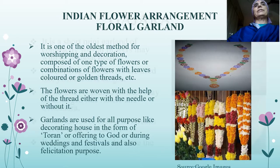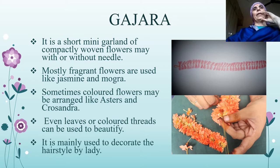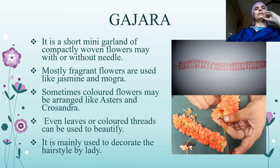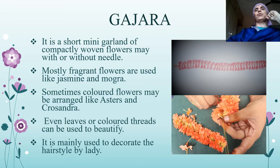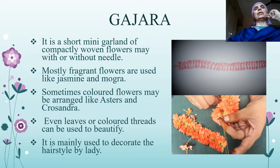The second Indian style is gajra. It is a short, mini garland of compactly woven flowers, made with or without a needle. In Maharashtra especially, gajra is made without the use of a needle. Mostly fragrant flowers are used — like jasmine, mogra, champa — and sometimes colored flowers like asters and concentra. Leaves or colored threads can also be used to beautify gajra. It is mainly used to decorate the hairstyle of ladies.